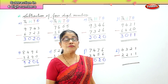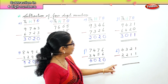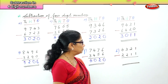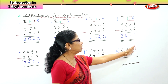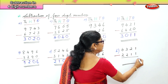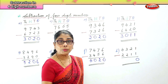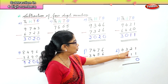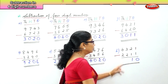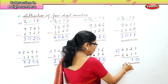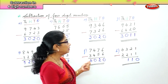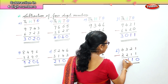The last sum: 4,321 minus 2,211. In the ones place, 1 take away 1 is 0. In the tens place, 2 take away 1 is 1. In the hundreds place, 3 minus 2 is 1. In the thousands place, 4 take away 2 is 2.